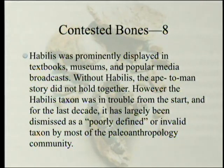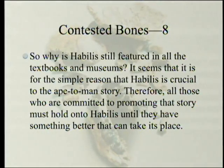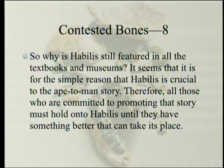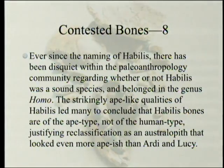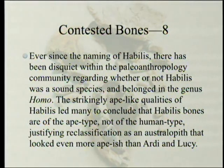However, the habilis taxon was in trouble from the start, and for the last decade it has largely been dismissed as a poorly defined or invalid taxon by most of the paleoanthropology community. So why is habilis still featured in all the textbooks and museums? It seems that habilis is crucial to the ape-to-man story, therefore all those committed to promoting that story must hold on to habilis until they have something better to take its place — basically, 'I haven't got anything else to put there.' Ever since the naming of habilis, there has been disquiet within the paleoanthropology community regarding whether it was a sound species belonging in the genus Homo. The strikingly ape-like qualities of habilis led many to conclude its bones are of the ape type, justifying reclassification as an Australopith that looked even more apish than Ardipithecus or Lucy.